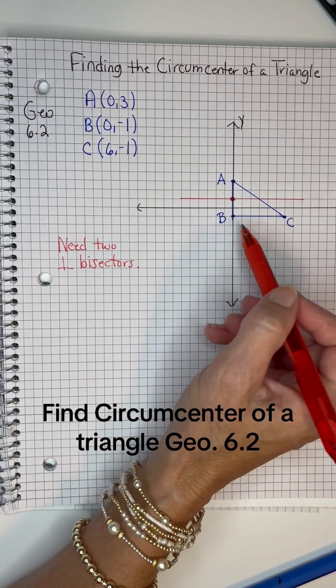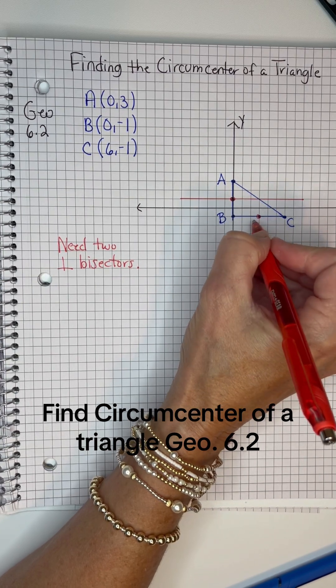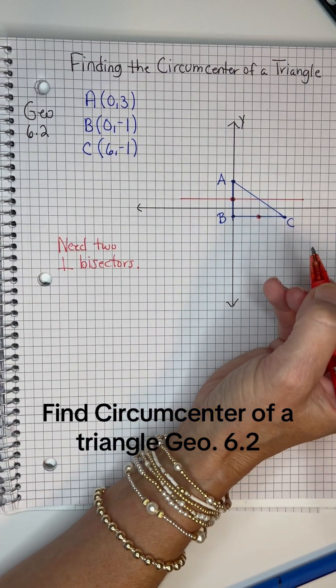Okay, and then BC. The middle of BC looks like it's there. Let's check it. One, two, three. One, two, three. Yes, it is.